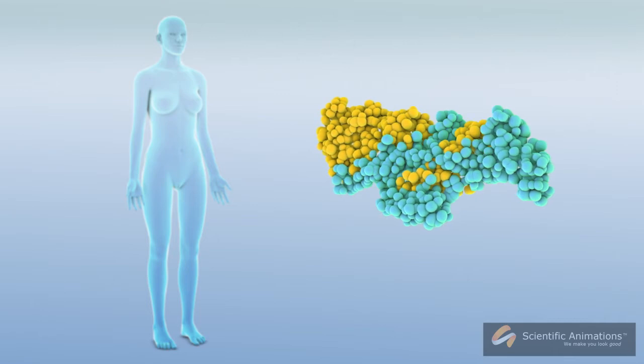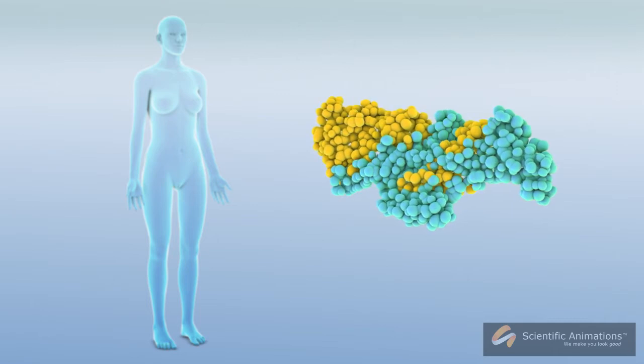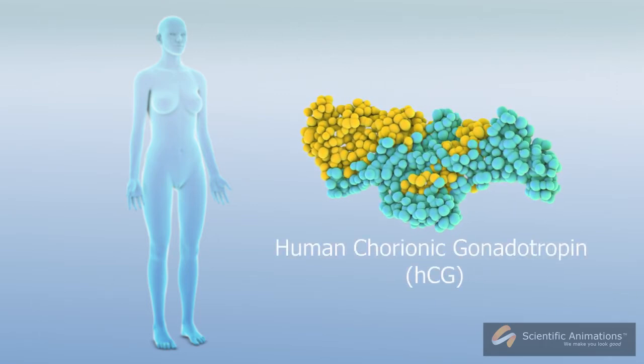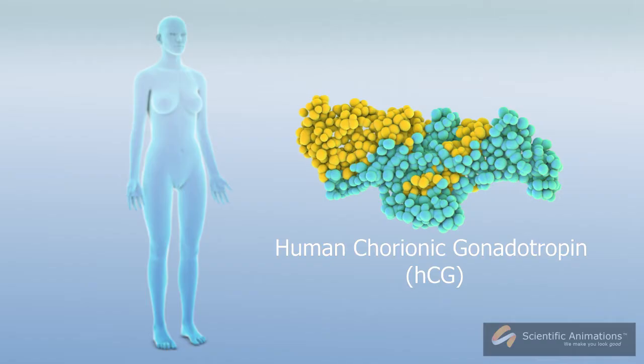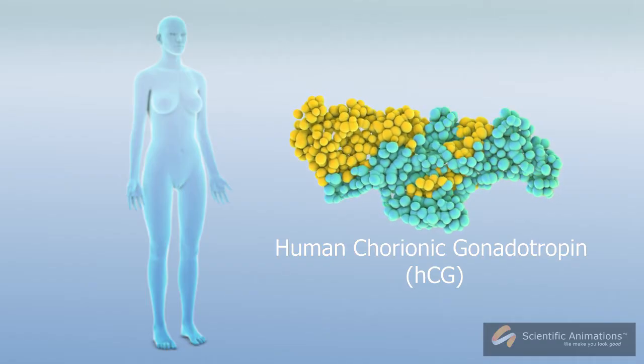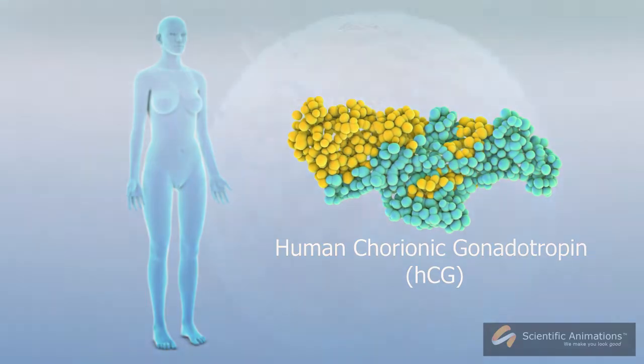A pregnancy test works by measuring a specific hormone in the body, human chorionic gonadotropin, or HCG.